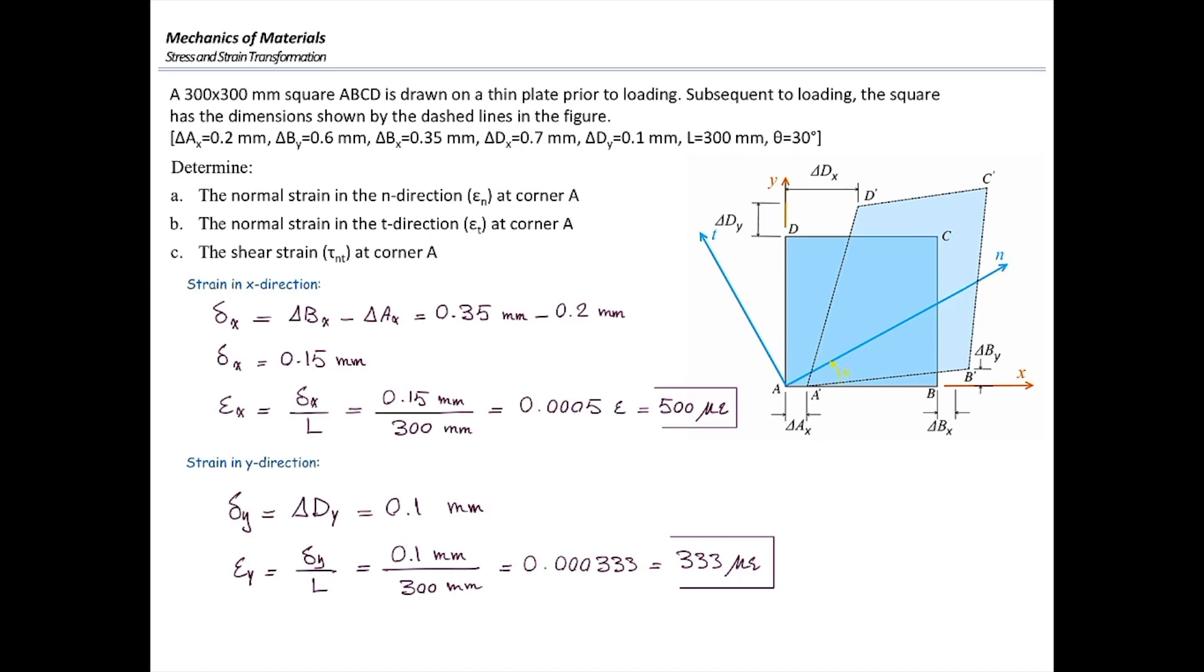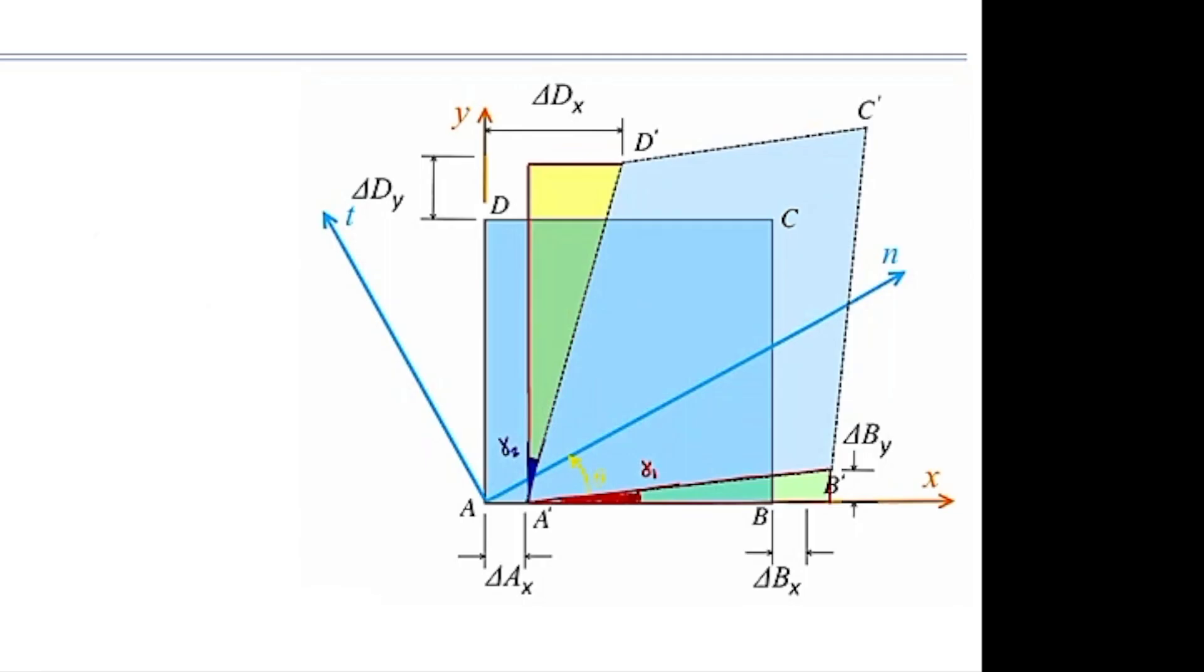These are normal strains. What about shear strains at that point? Shear strain is the change in the angle. For determining shear strain, we need to see how much is the change in the angle at that corner. And following the figure, we can identify two angles, gamma 1 and gamma 2. And we can determine how much is gamma 1 and gamma 2 using those triangles shown in the figure.